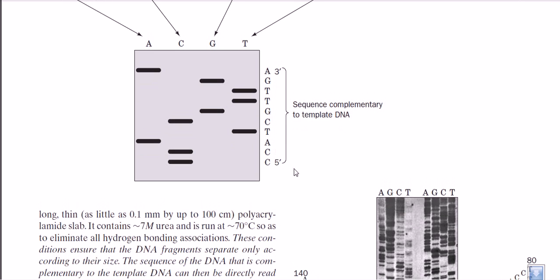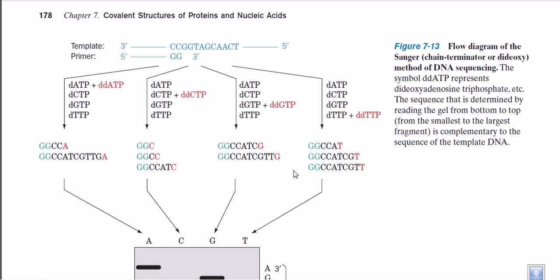This technique works for knowing the sequence of a small stretch of nucleotides. However, it works only for smaller stretches of nucleotide sequences. If we have a very long DNA sequence, we cannot directly use this process. In those cases, we need to first fragment the large DNA into smaller pieces, then perform sequencing on each fragment using gel electrophoresis.